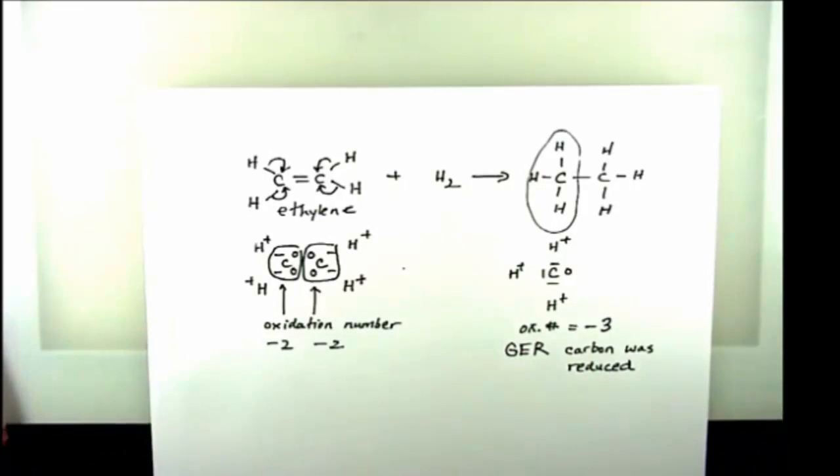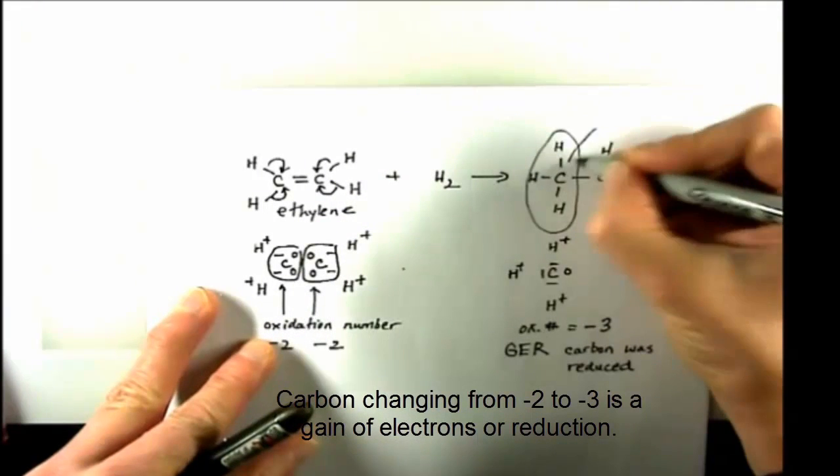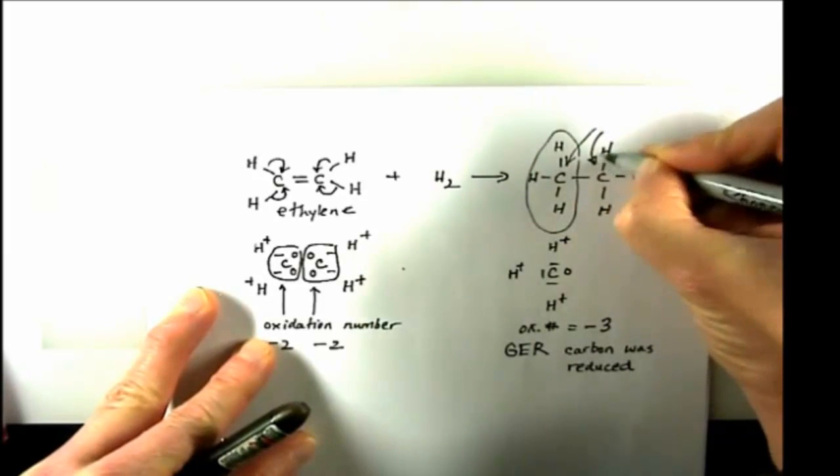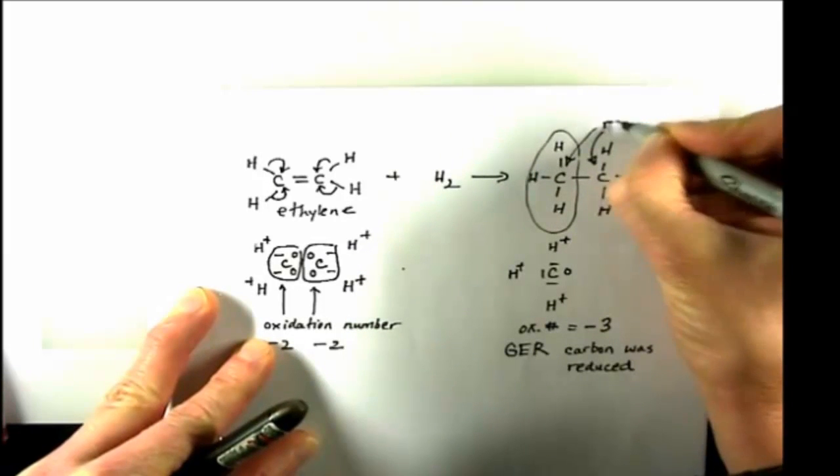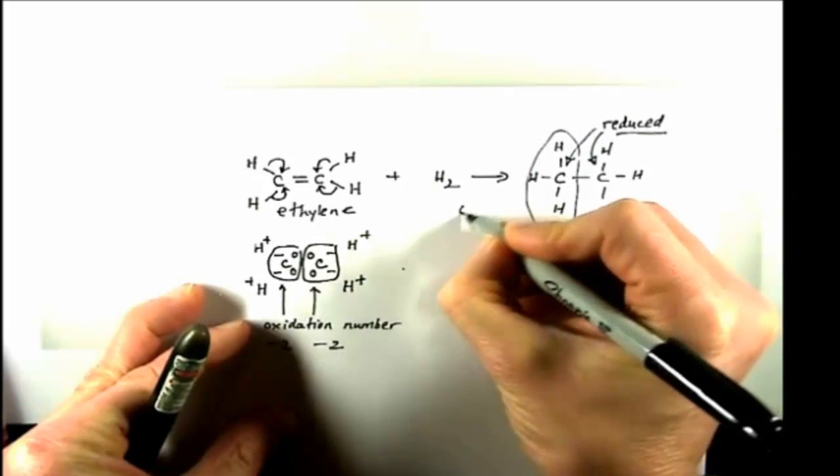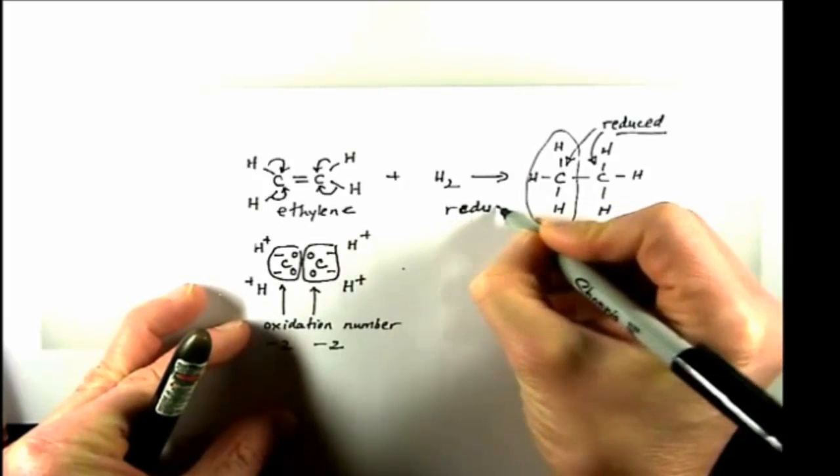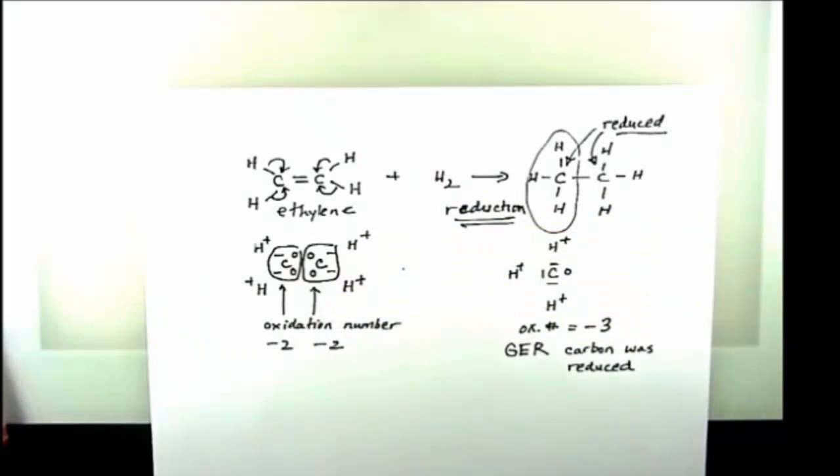Electrons are negatively charged, so if that oxidation number becomes more negative, that's a gain in electrons, and that's a reduction. In this reaction, I have both of my carbons being reduced. So this overall reaction is a reduction reaction.